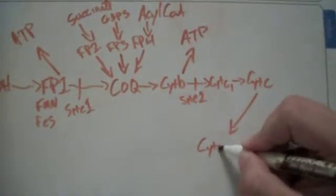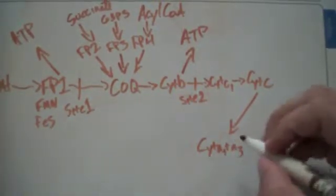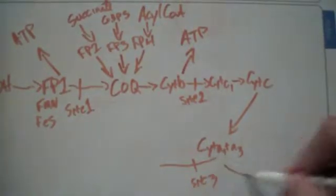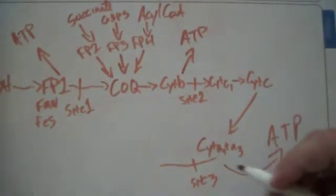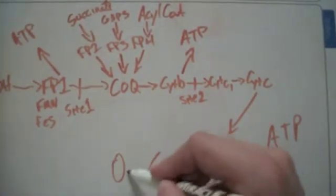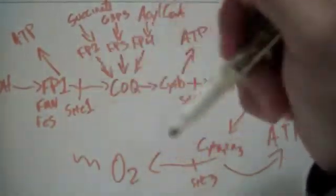Cytochrome A1 plus A3, and that would be site number three. What happens? ATP. And then, finally, the electrons are brought to oxygen, which goes on to ATP synthase and turns out a bunch of ATP.